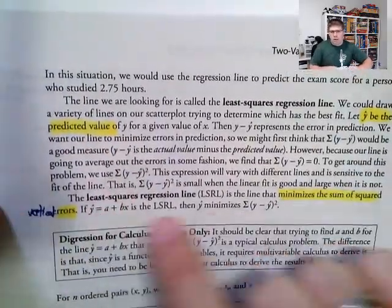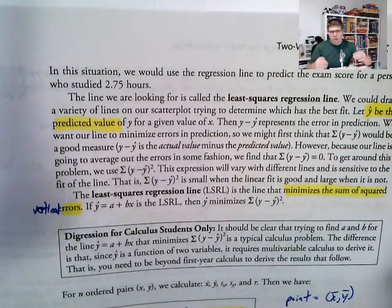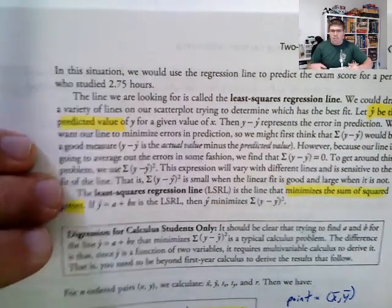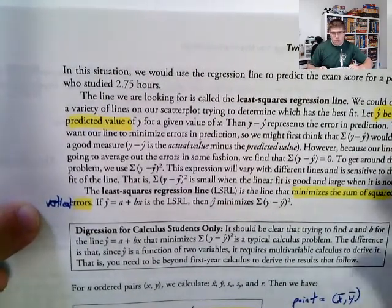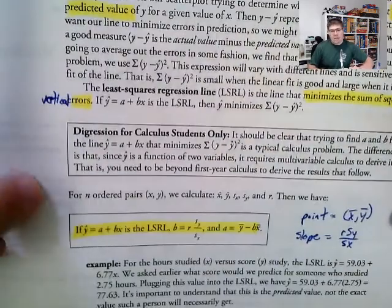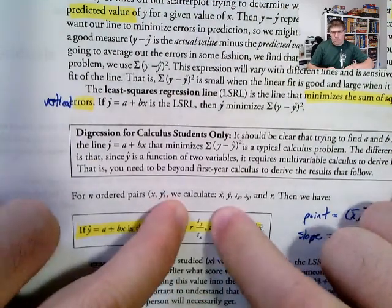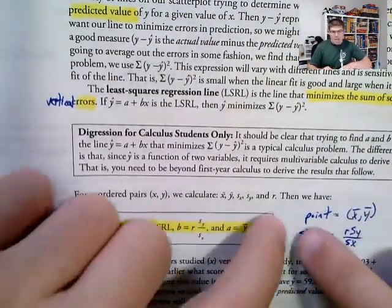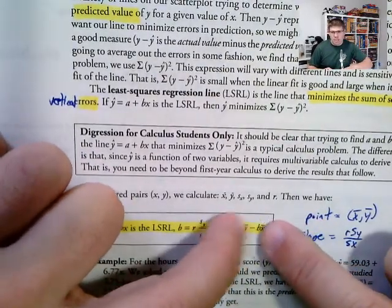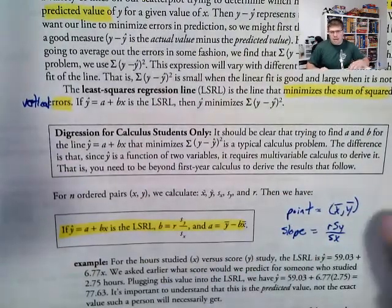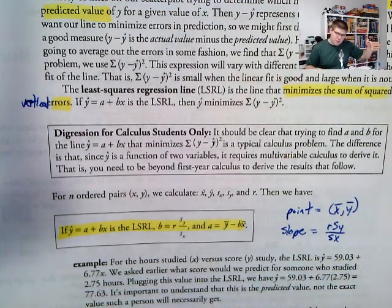What the least squares regression line does is it minimizes the squared vertical distances. So these y minus y hats it's talking about, those are actually residuals. We'll come back to that. But it's minimizing those squared vertical distances, minimizing those squared residuals. So that's what the line does. You can do it by hand with some formulas. Once you know correlation, you can multiply by sy over sx. The standard deviation of y over the standard deviation of the x's to get the slope. And then you effectively figure out, you plug in a point to figure out what the y intercept should be. And the point is x bar y bar. So the point x bar y bar and the slope is that.